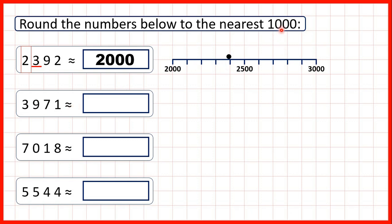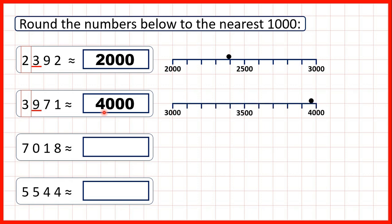We're rounding to the nearest thousand, so we highlight our thousands digit and underline the digit to the right. This time we have a nine in our hundreds. Remember, if it's five or more, we round up. When we round up, the digit that we've circled increases by one — so this three is going to become a four because we're rounding up. All other digits turn into zeros, so we get 4,000.